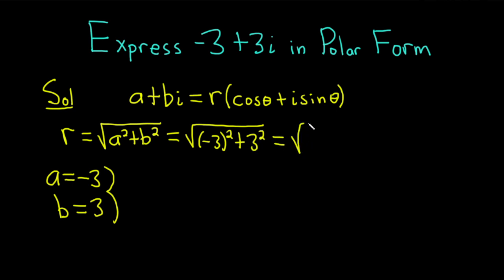That's equal to the square root of, negative 3 squared is 9, and it's positive. 3 squared is 9. 9 plus 9 is 18, so we get the square root of 18. So r is the square root of 18.